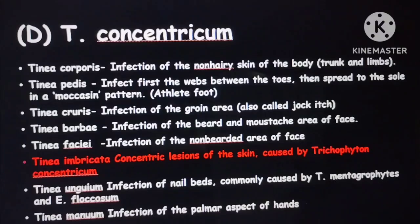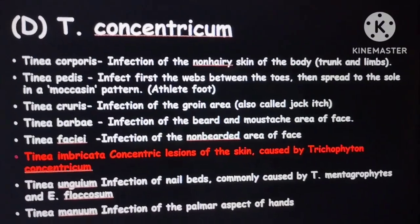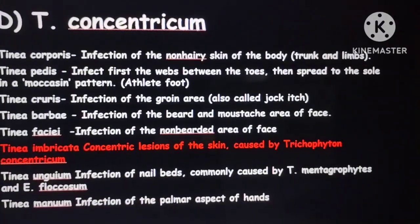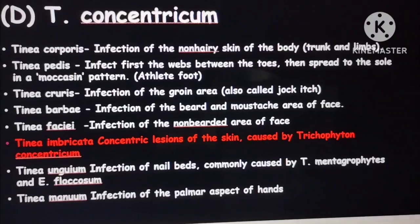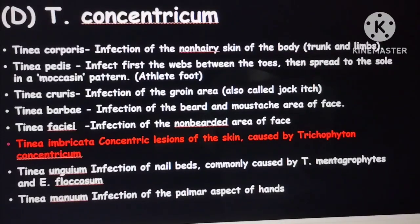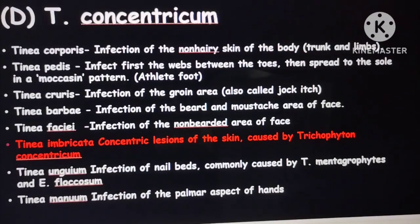Tinea imbricata is caused by Trichophyton concentricum. Tinea unguium is seen in the nail beds and is mainly caused by Trichophyton mentagrophytes and Epidermophyton floccosum. Tinea manum is mainly in the hands.